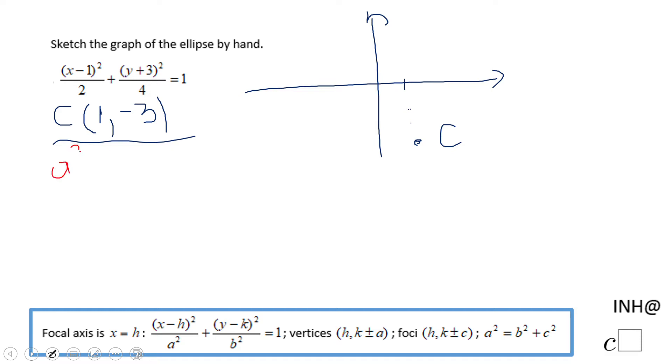a squared is 2, so obviously a will be square root of 2. And don't forget to put a plus and minus. So that means from this center of the ellipse C, I'm going to move square root of 2 units left somewhere here, and square root of 2 right, one point something right, square root of 2, and I get two vertices of this ellipse.